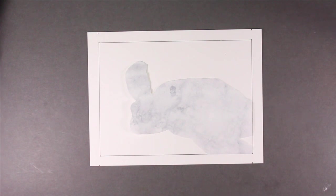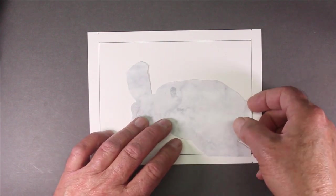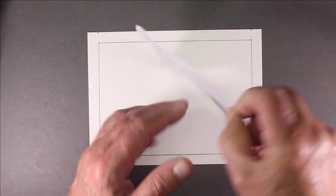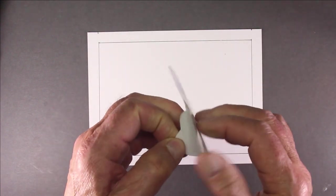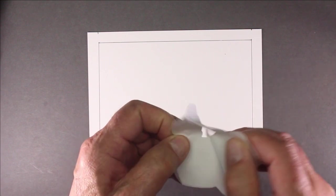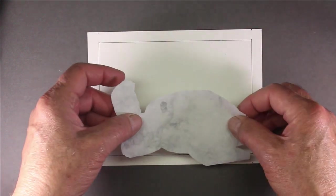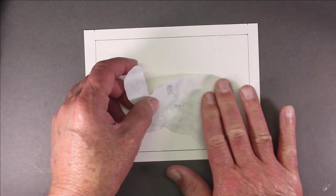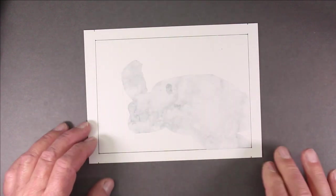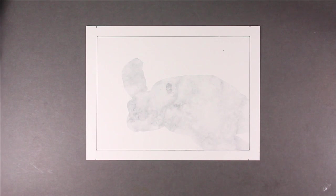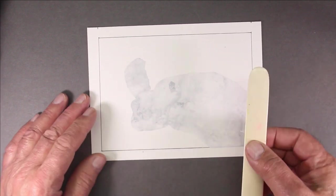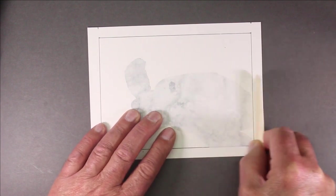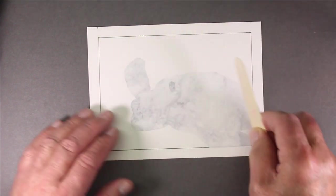I will now remove the backing off the contact paper and adhere it to the Yupo paper. I will burnish the contact paper with a bone folder to make sure I get all the air out from behind the contact paper.